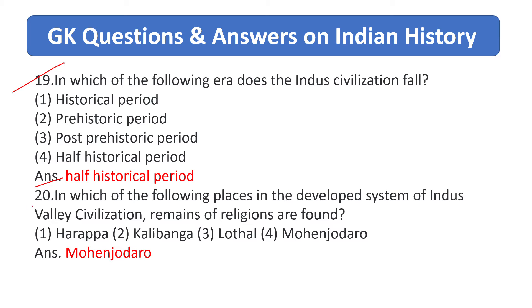In which of the following places, in the tabular system of Indus Valley civilization, are remains of religions found? Answer is Mohenjo-daro.